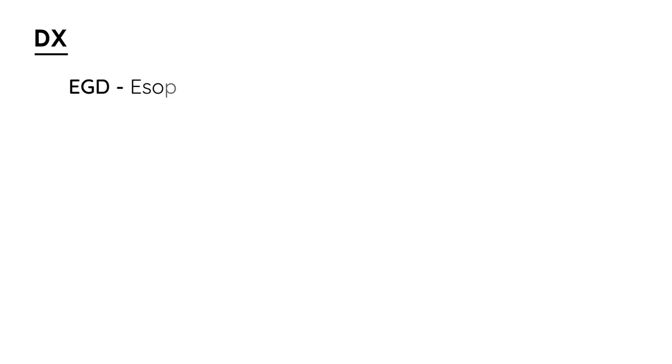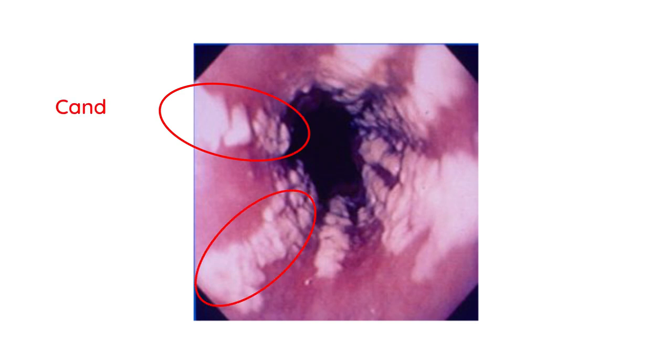In terms of diagnosis, the best way to visualize esophagitis is by doing an EGD — esophagogastroduodenoscopy. Here is a picture of a snapshot from a patient with candida esophagitis, showing what was seen during the EGD. These white areas are the candida, and as you can see, it's pretty characteristic.